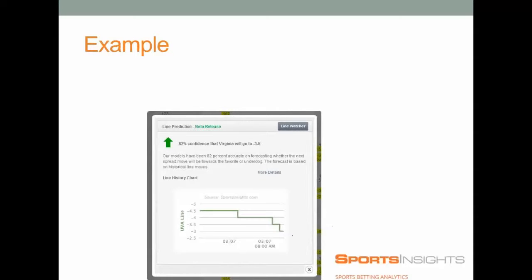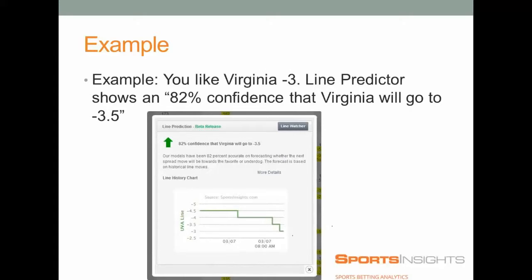Here's an example. We're looking at a Virginia-Florida State game. If you already liked Virginia at minus three, we have a line prediction showing an 82% confidence level that Virginia will go to three and a half. So you would hopefully jump on that game at three, saving yourself the half point, and this is exactly what our prediction looks like. You can see the line chart below the predictions — it will show the confidence level, where the line has been, what's happened since then, and where it's going.